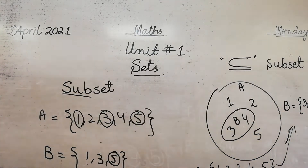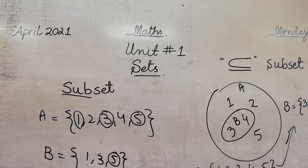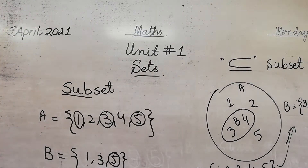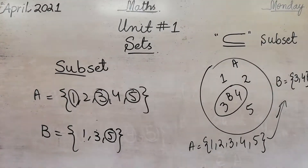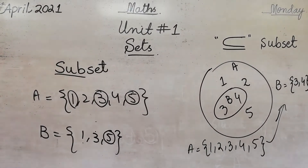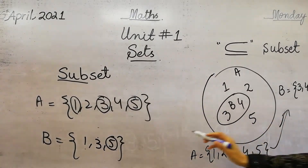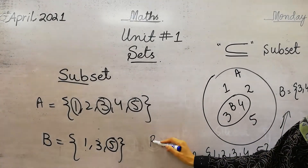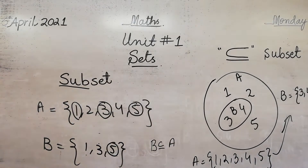So which is the subset — A or B? B is small and A is big, so B is a subset of set A.